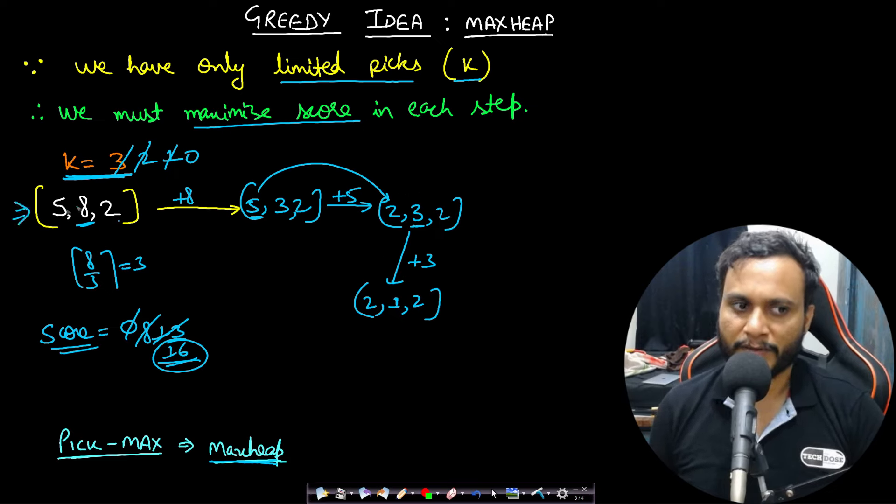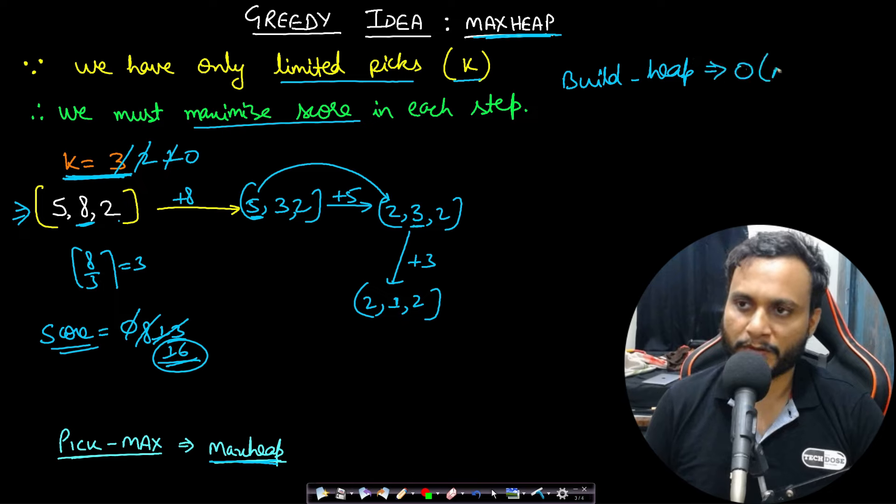The idea is whenever you are given the initial array, you have to push all these items into a max heap. Which algorithm is efficient? We will use the build heap algorithm. We should not push the items one by one because that will be n log n. If you use build heap algorithm that will be order of n.